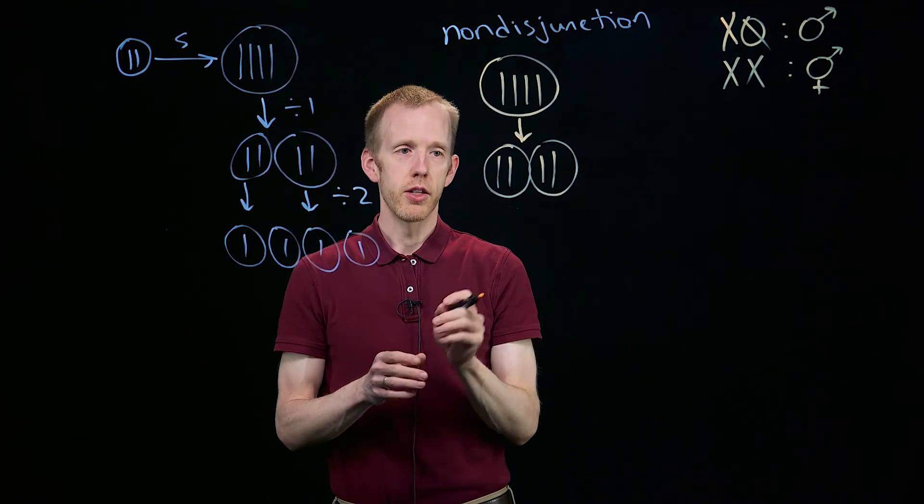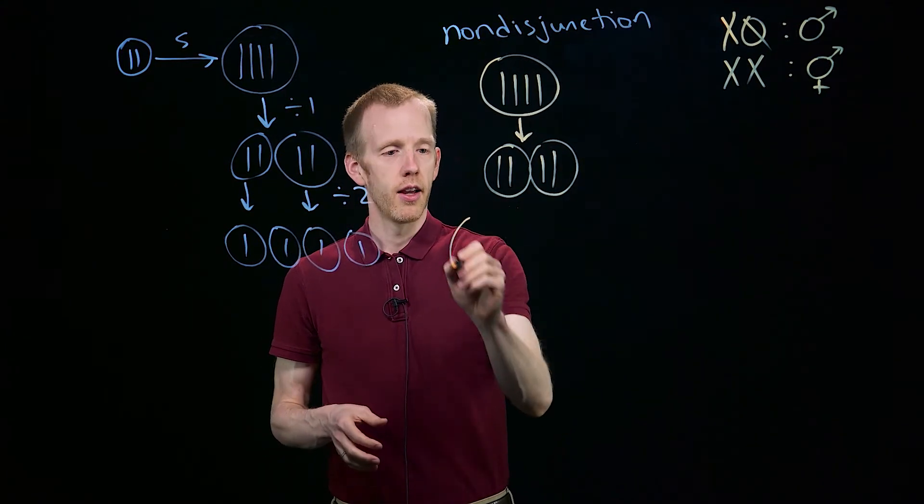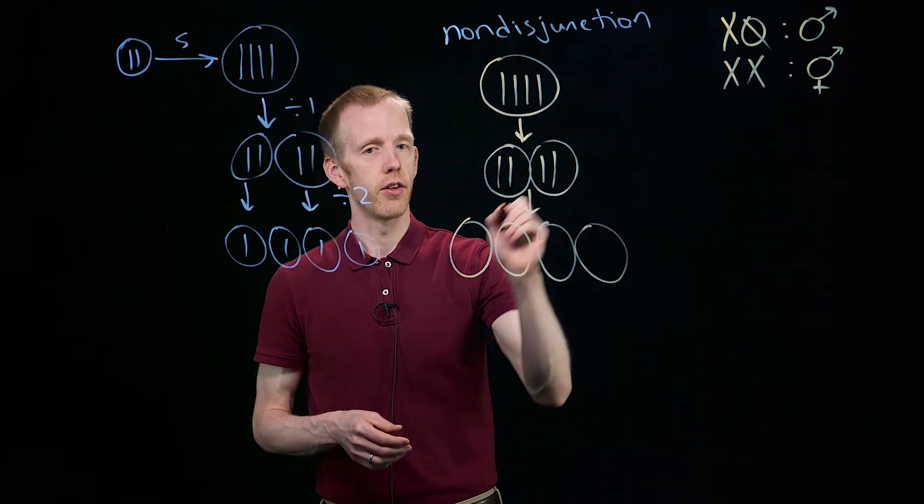Non-disjunction means that those two chromatids don't disjoin or separate into the four gametes during the second cell division.